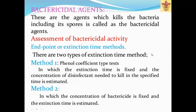Bactericidal agents are agents which kill the bacteria, including their spores. This is what is called bactericidal. Unlike bacteriostatic agents, which only inhibit growth at a specific stage of bacterial growth — there are four stages — bactericidal agents specifically kill the bacteria. They will kill at any stage. This is the bactericidal group of agents.